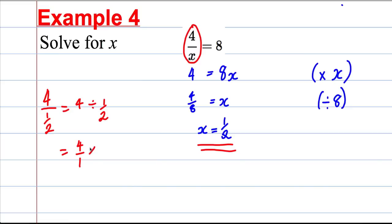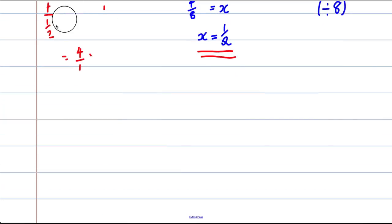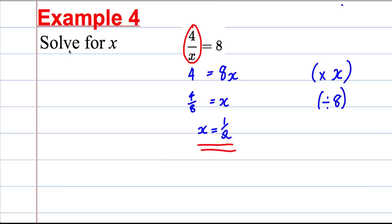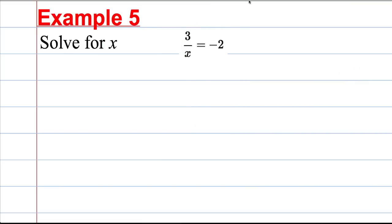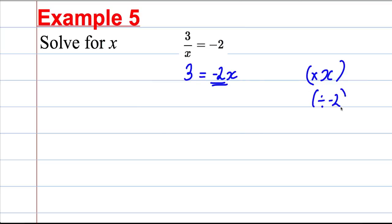We can verify: 4 over 1 divided by one half is the same as 4 over 1 multiplied by 2 over 1 which equals 8. Example 5: 3 divided by X equals negative 2. Multiply both sides by X: 3 = −2X. Divide both sides by −2: X = 3 over −2 = negative 3 over 2, which is negative 1.5. Check: 3 divided by −1.5 is indeed −2.